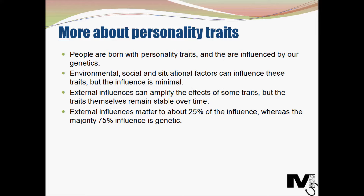Eysenck elaborated that people are born with personality traits, and that these traits are actually a result of our genetics. He also believed that these traits remain coherent across different situations and remain stable over time. He proposed that although environmental, social, and situational factors can influence these traits, the actual influence is minimal, and although some external influences can amplify the effect of some traits, the traits themselves remain more or less stable. He believed external influences matter to about only 25% of the influence on these traits, whereas the majority 75% is genetic.